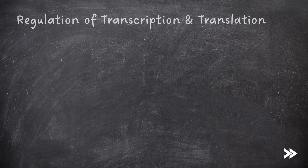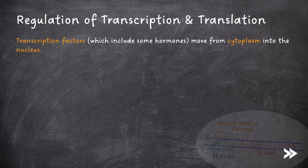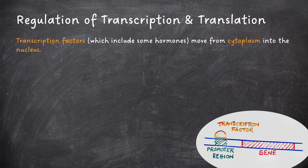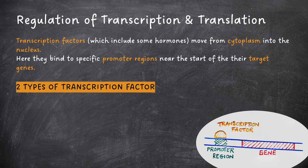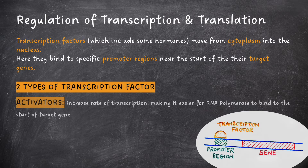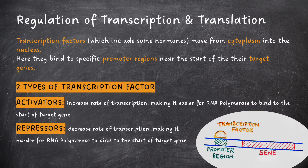So let's make a start. Transcription factors, which include some hormones, move from the cytoplasm into the nucleus. Here they bind to specific promoter regions near the start of their target genes. There are two types of transcription factor: activators and repressors. Activators increase the rate of transcription, making it easier for RNA polymerase to bind to the start of the target gene. Repressors, on the other hand, decrease the rate of transcription, making it harder for RNA polymerase to bind to the start of the target gene.